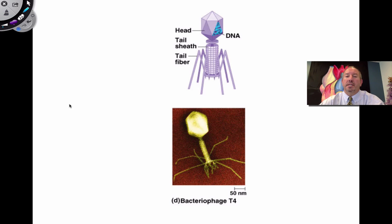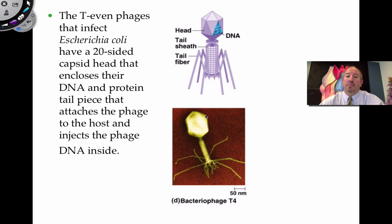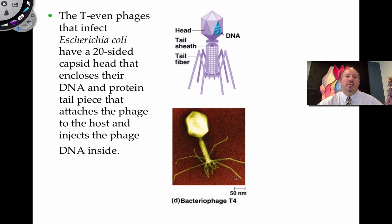If you're familiar with the Hershey-Chase experiment — one of the great experiments in molecular biology — they used radioactive isotopes to establish that the protein capsid stays on the outside of bacteria. They labeled the radioactive isotope of sulfur, which is found in amino acids, and they labeled the phosphate, which is found in DNA. That showed the DNA went inside the cell. These T-phage bacteriophages that infect E. coli are 20-sided. They use this column to inject their nucleic acid into E. coli — that's how they infect the host.